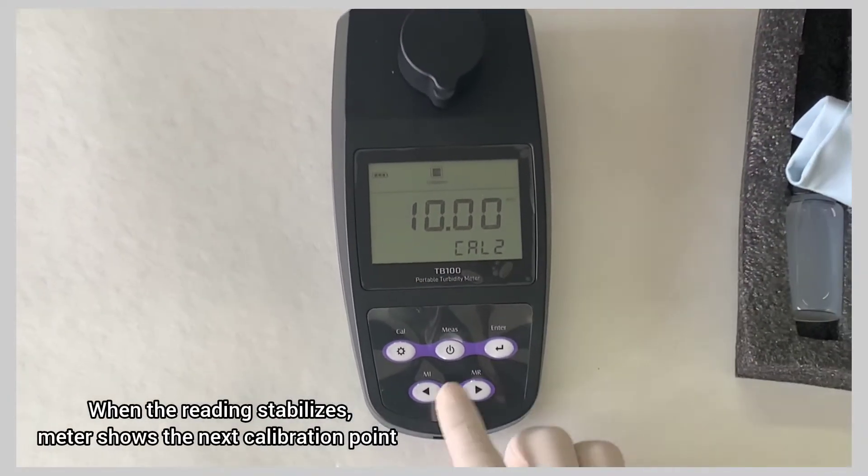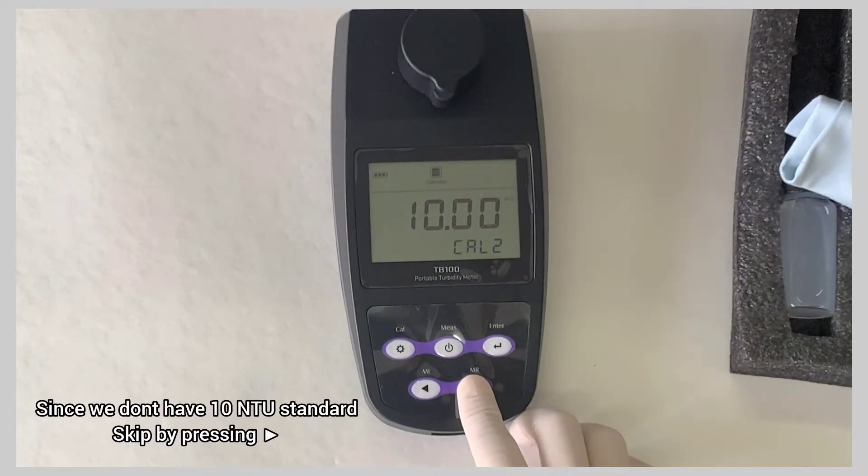When the reading stabilizes, the meter shows the next calibration point. Since we don't have 10 NTU standard, skip by pressing the given arrow.